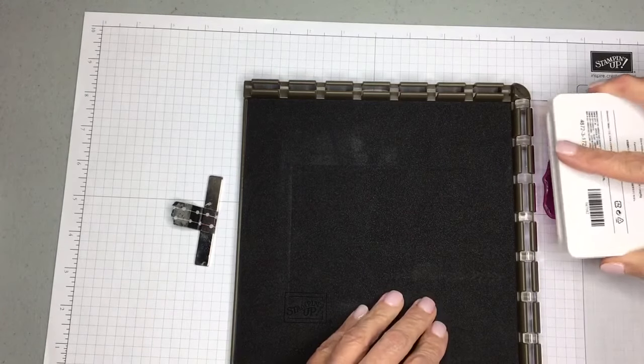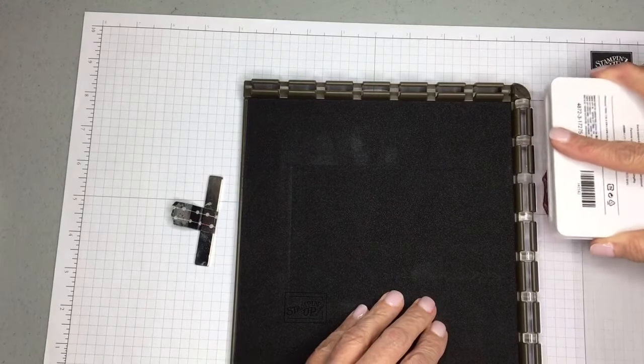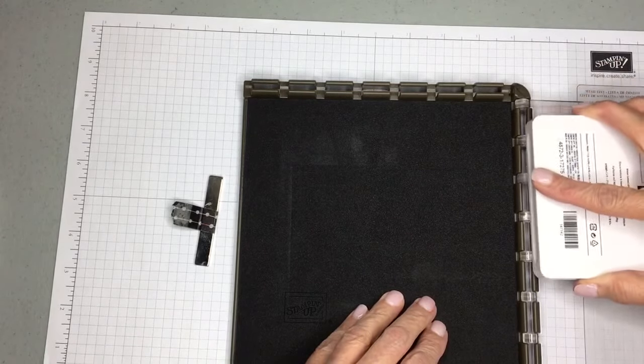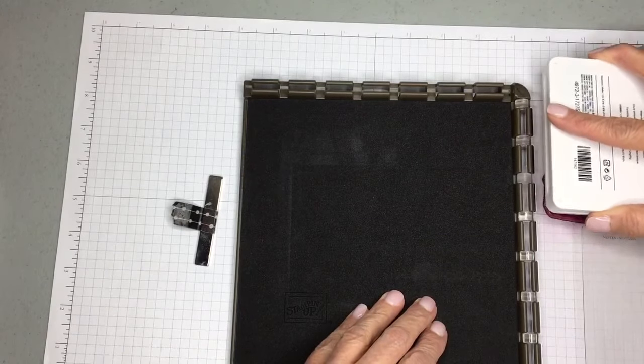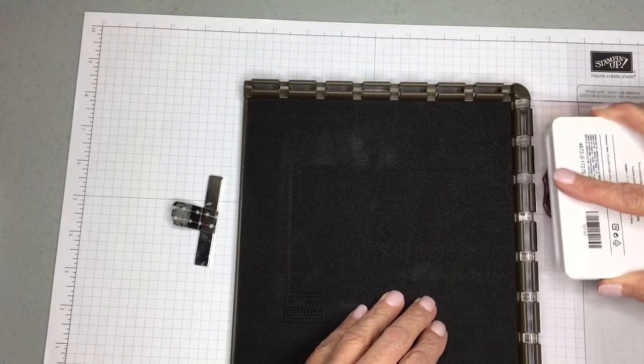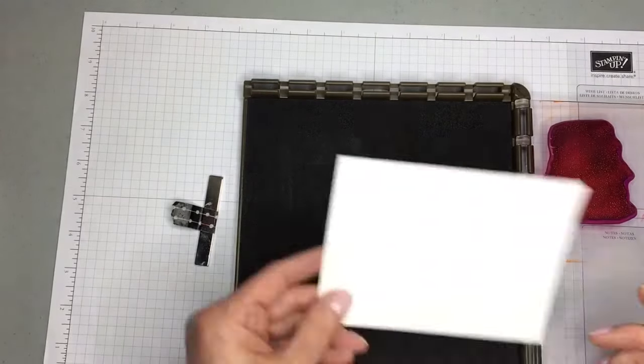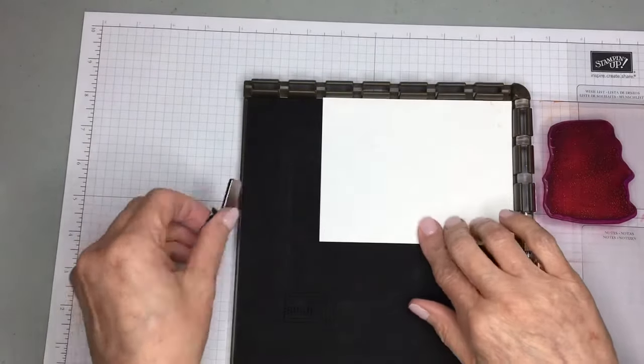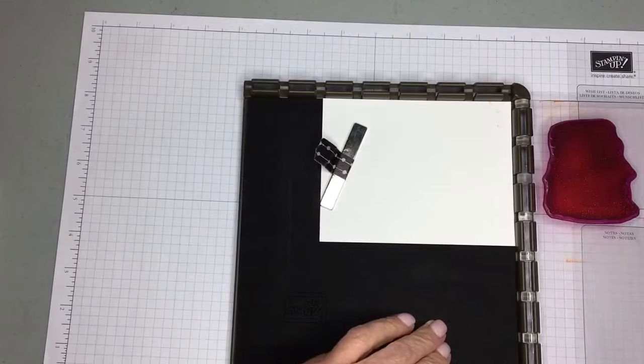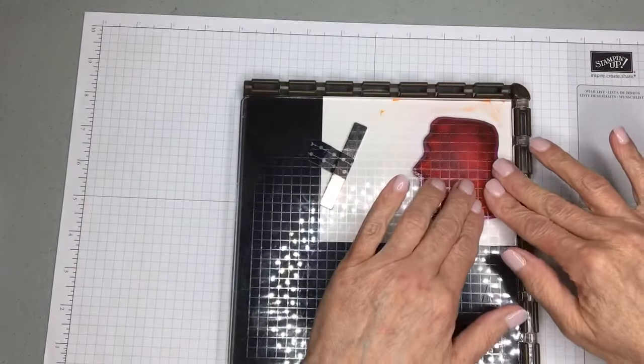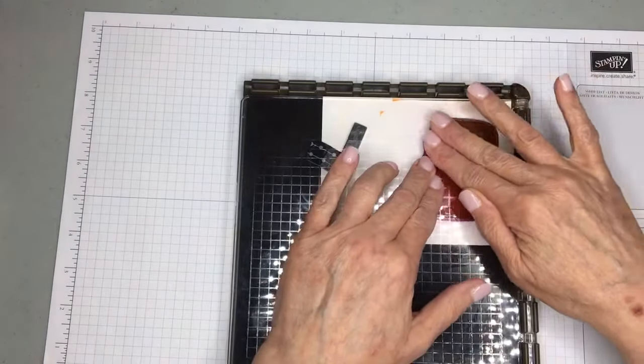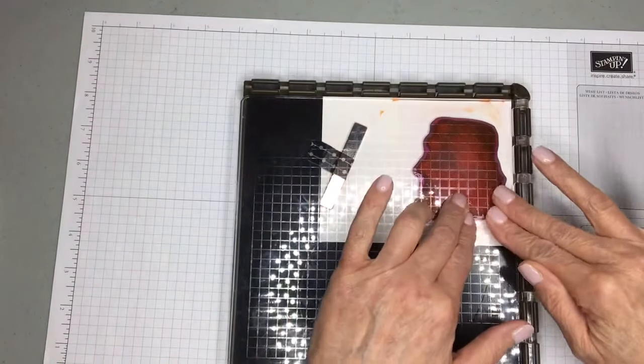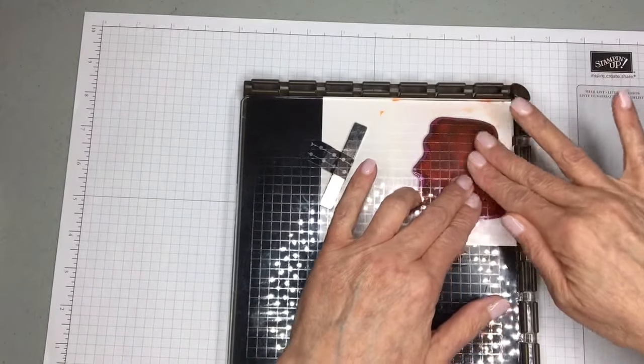Use some Grapefruit Grove ink. It's a mouthful, isn't it? And we'll ink it up really good. Put my cardstock in right quick, and hold that down with my magnet. Bring the plate over, and I'm just putting some pressure. Get that ink to transfer.